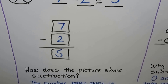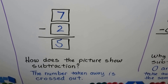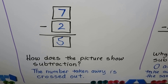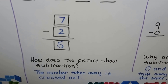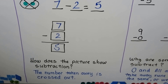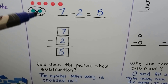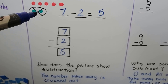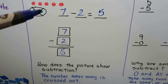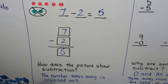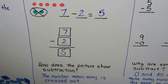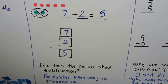How does the picture show the subtraction? The number taken away is crossed out. That's how we know the picture is showing subtraction.